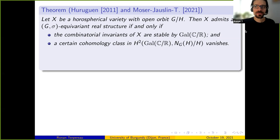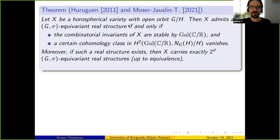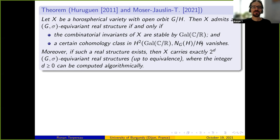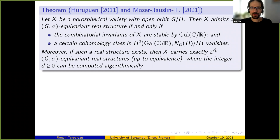This completely answers the first question — does there exist a real structure on X? For the second question we also have a complete answer: when a real structure exists, there are exactly 2^d equivalence classes of equivariant real structures, where d can be computed algorithmically from the combinatorial invariants corresponding to X.